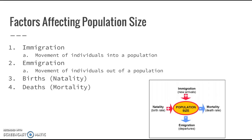Next we have births, which is going to be the birth rate — how many new members of the population are born over a certain amount of time — as well as deaths, how many have died over a certain amount of time. You can see plus signs from birth and immigration making the population size bigger, and emigration and mortality are going to make it smaller.